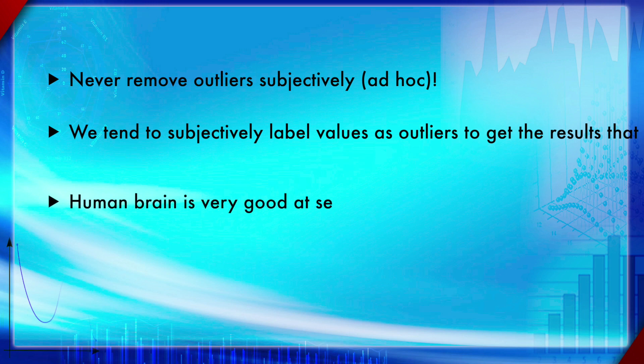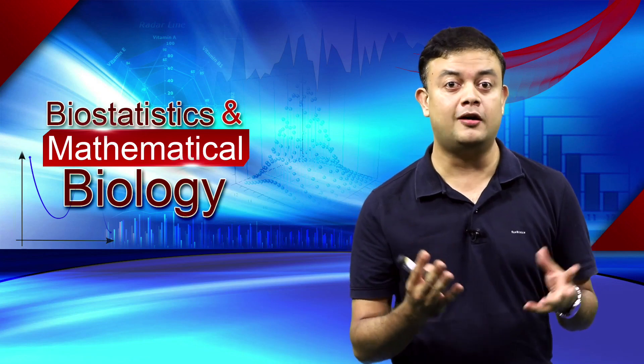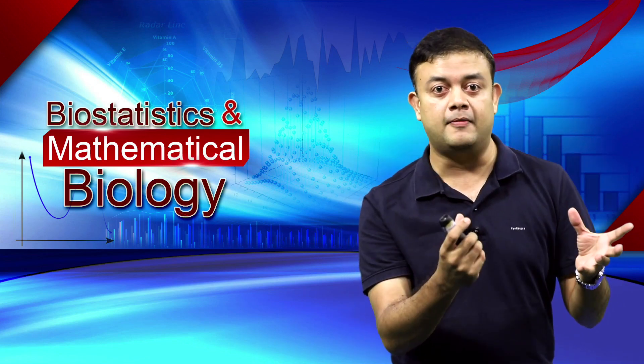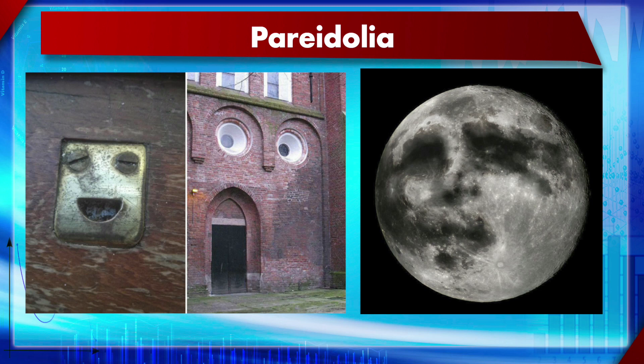It is a form of cheating to remove whichever outliers you would like to remove. The human brain is very good at seeing patterns while not so good at recognizing random scatter. For example, when I went to Antarctica recently as part of the Indian mission, I saw several massive icebergs, most of which had a blue color. Looking at a few icebergs, I thought one looked like a man or a woman.